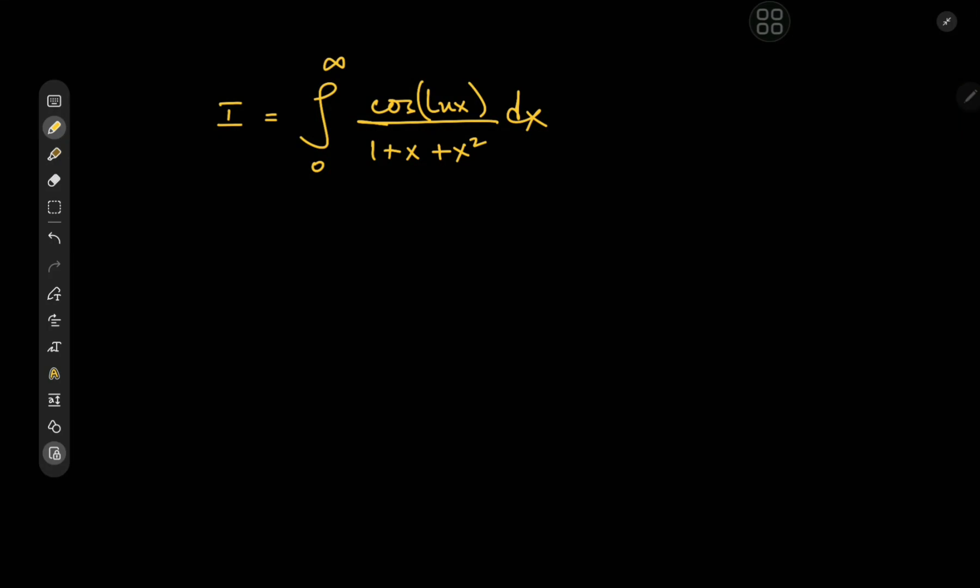Greetings and welcome back. Today we have yet another very cool integral that Wolfram Alpha could not return a closed form for, and that's actually the case with quite a few of my integrals, so that's something I'm quite happy with. We have the integral from 0 to infinity of cosine(log x) divided by 1 plus x plus x squared, dx.